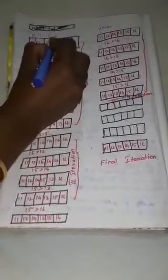Let us see one example. This is the array element: 15, 11, 16, 12, 14, 13. The index values start from 0, 1, 2, 3, 4, 5.